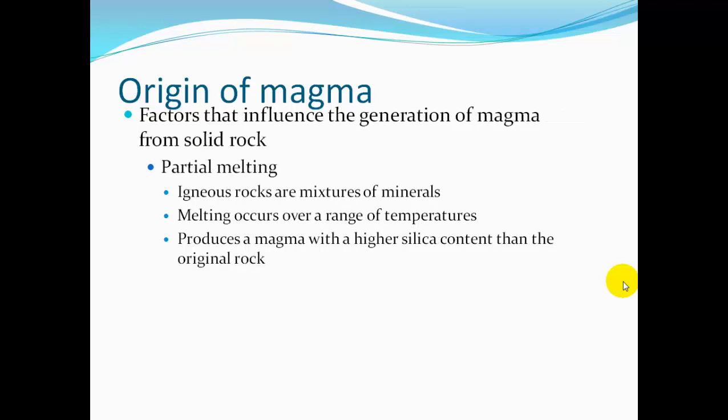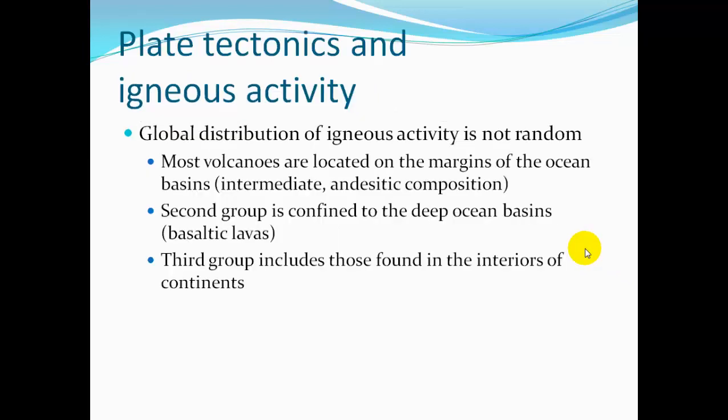Partial melting: igneous rocks are a mixture of minerals, and melting occurs over a range of temperatures because each mineral has a different melting point. As the minerals melt at the right temperature, you end up with a magma with a higher silica content than the original rock, because silica — the quartz and silicates — melt at a lower temperature than the very mafic minerals.